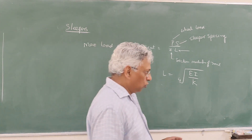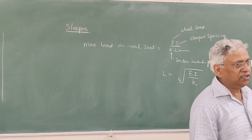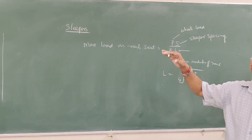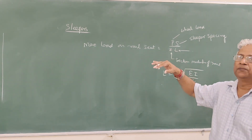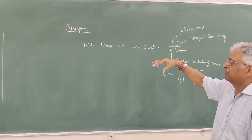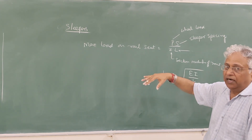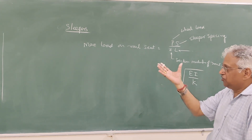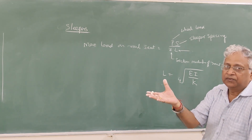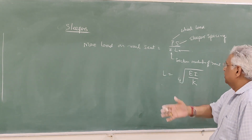Now this load is about 30 to 50% of the wheel load — the dynamic wheel load — which comes on the rail seat. And each sleeper supports 2 rail seats.